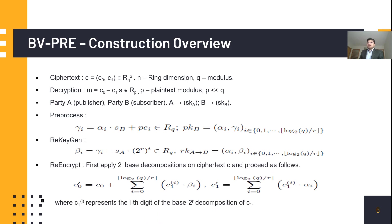To perform re-encryption, we first apply base decomposition — or binary decomposition — on all elements in the ciphertext. We then recombine them with the beta_i and alpha_i components of the re-encryption key. After summing all these components, we obtain a ring LWE pair C0' and C1', which forms the re-encrypted ciphertext.